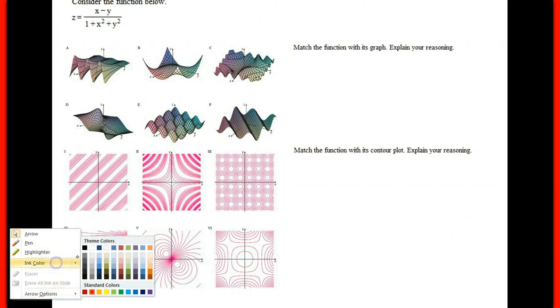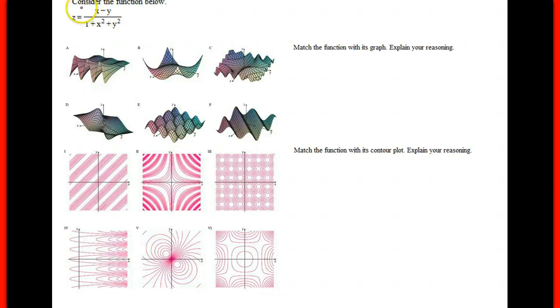Alright, so we're trying to figure out how this matches up, and we have this function z equals x minus y over 1 plus x squared plus y squared. We have to match it to the graph.